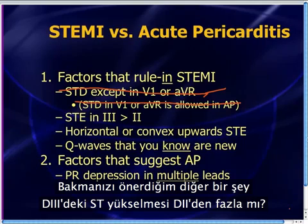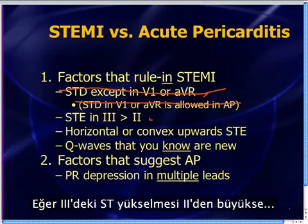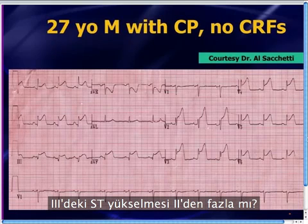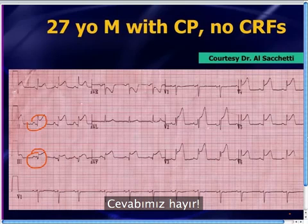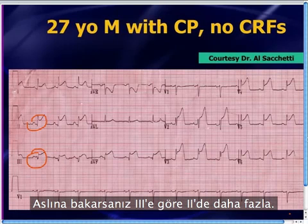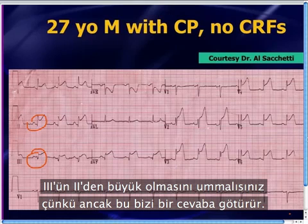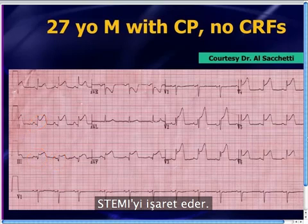The next step: is there ST elevation in lead III greater than in lead II? If there's ST elevation in III greater than II, it's got to be a STEMI. Looking at this case, the answer is no — it's actually greater in II than in III. You can only draw conclusions when III is greater than II, because that points toward STEMI. So we can get rid of this rule as well.